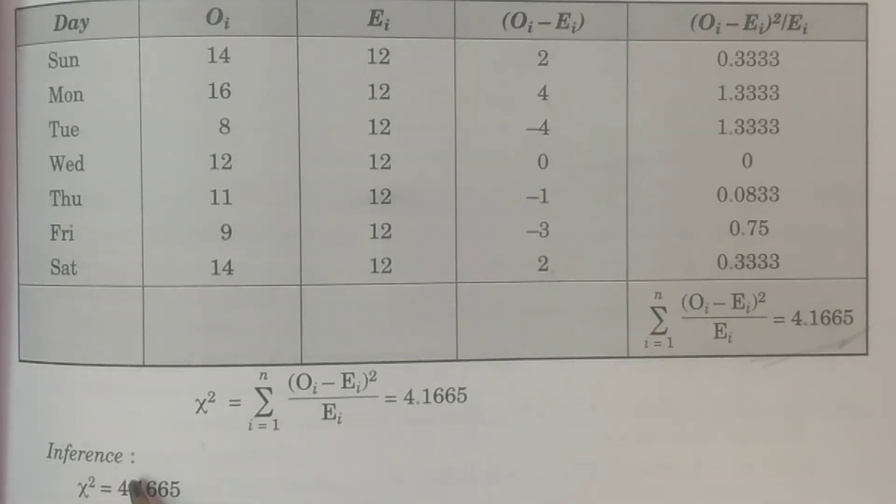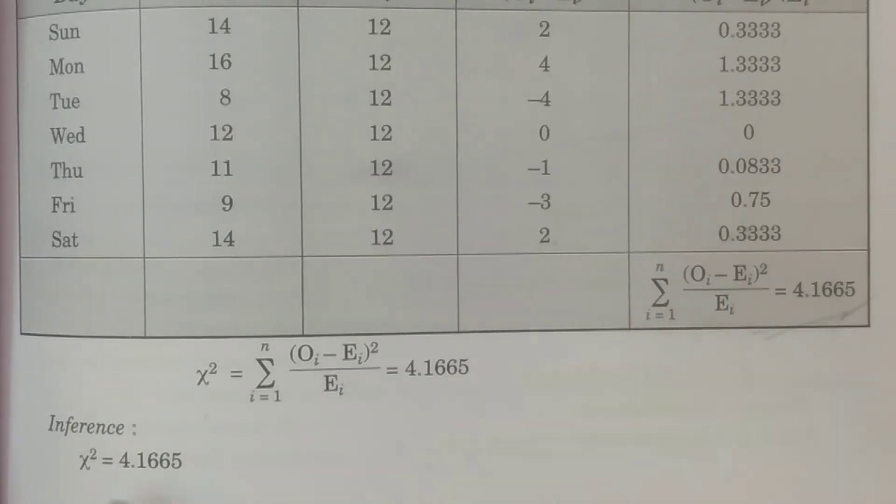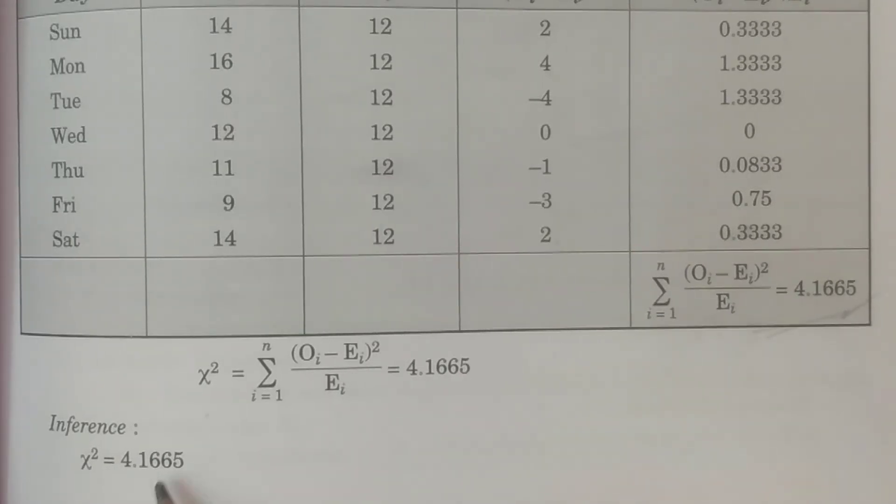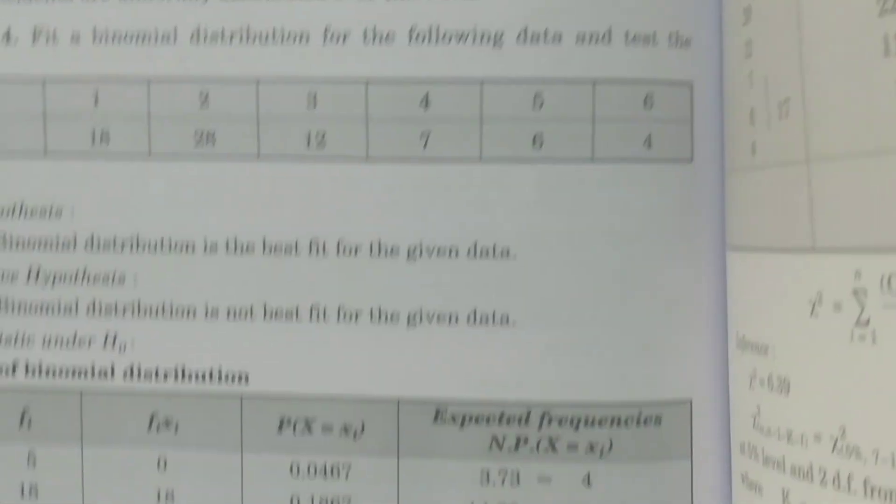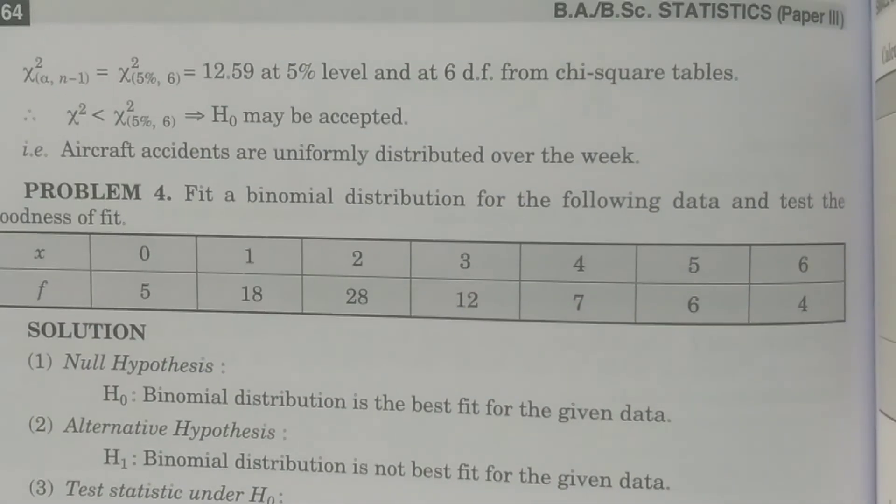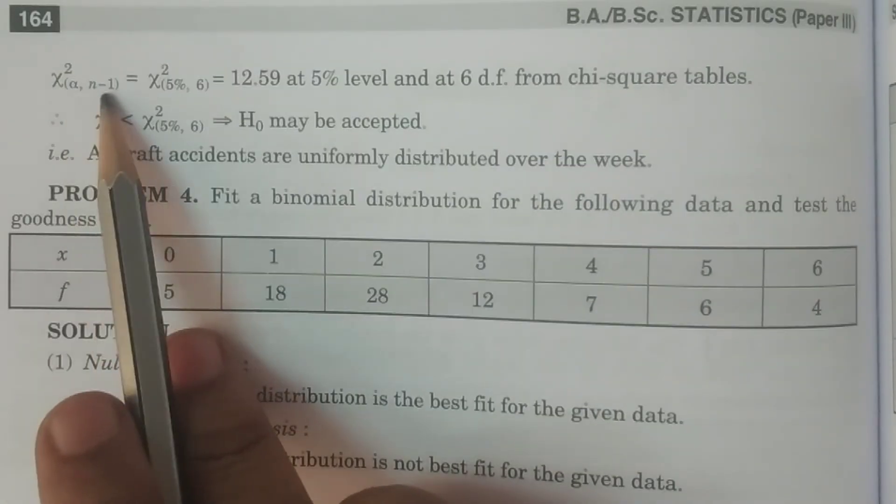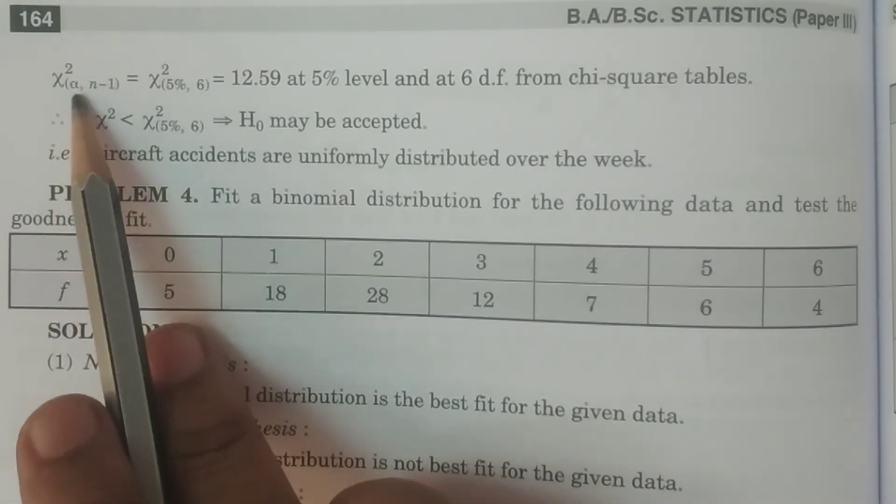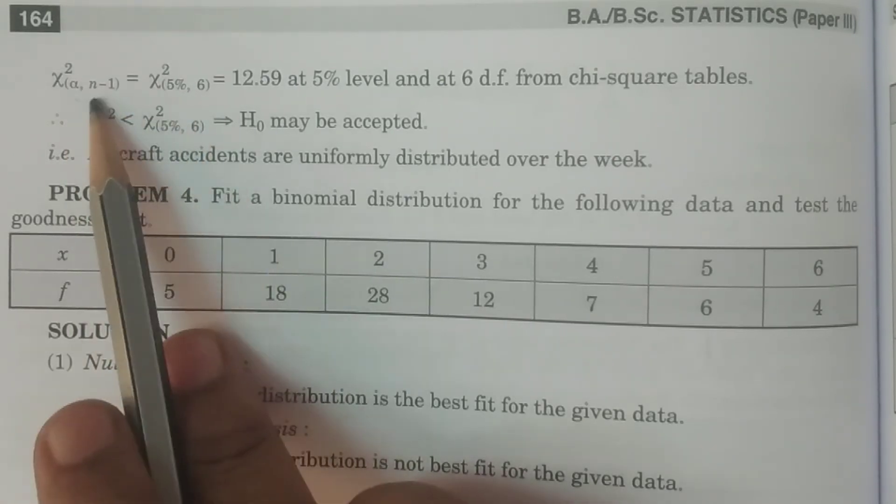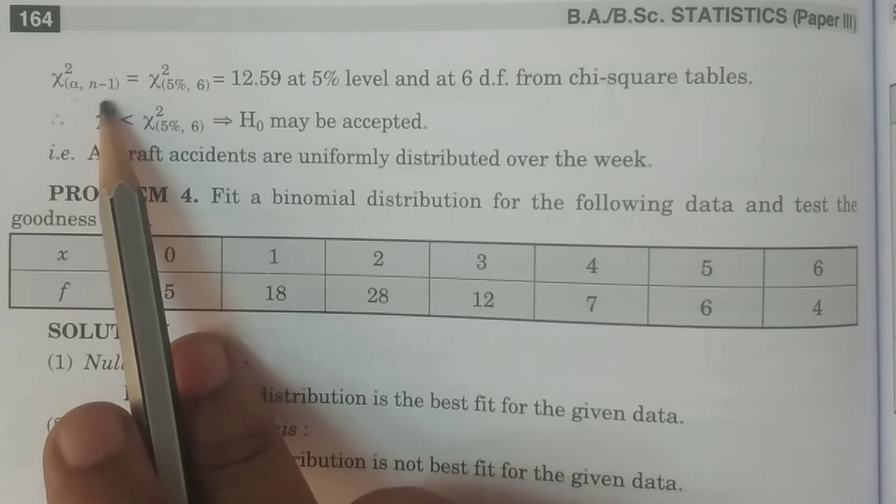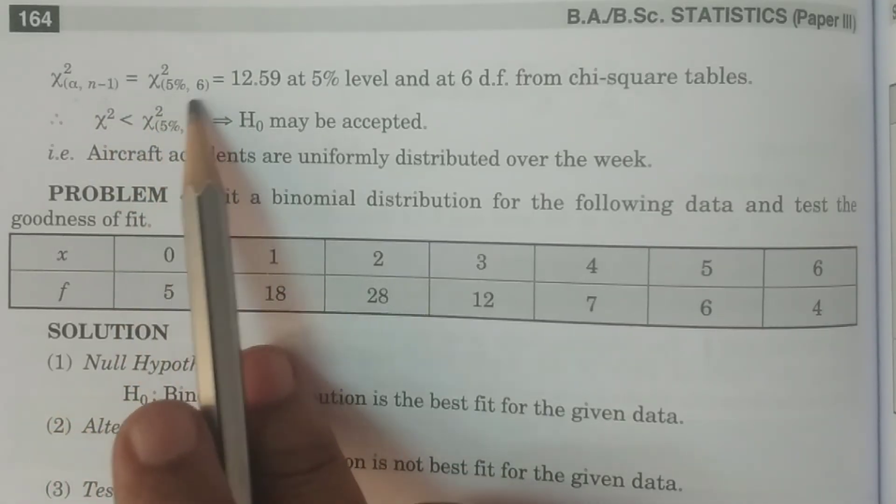So in the inference or the last point comparison and conclusion, chi-square is equal to calculated value, chi-square is equal to 4.16. And you have to get the tabulated value at alpha level of significance and n minus 1 degrees of freedom, chi-square alpha comma n minus 1. Alpha is not given, hence we are considering 5 percent. n minus 1, total observations are 7, 7 minus 1, 6. So 5 percent and 6.